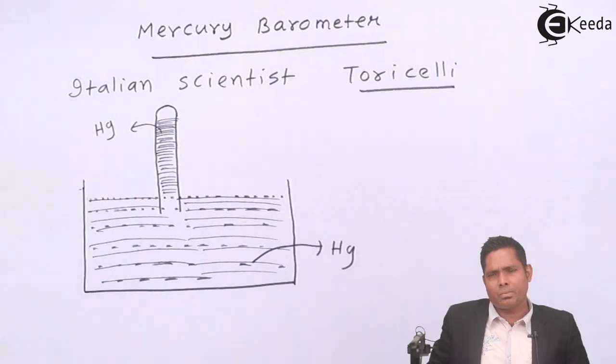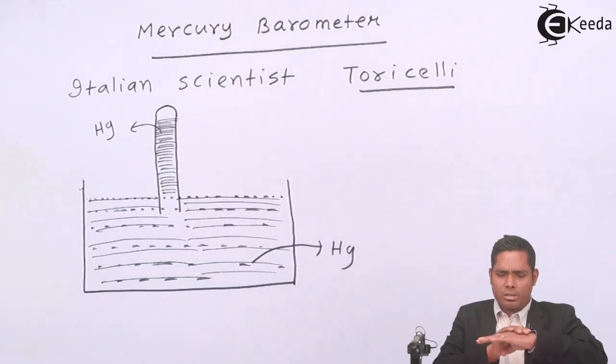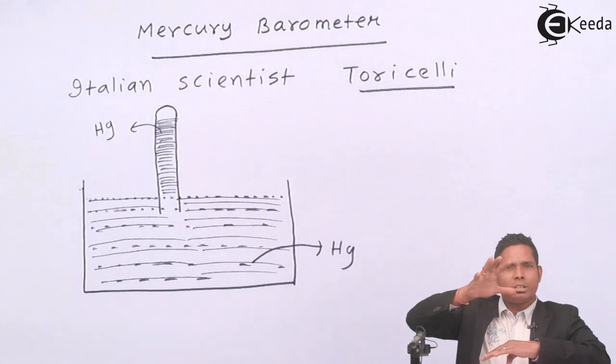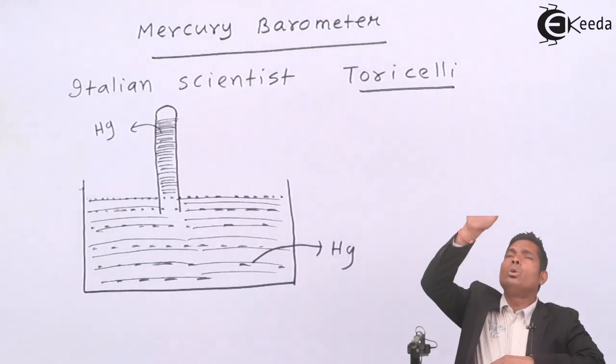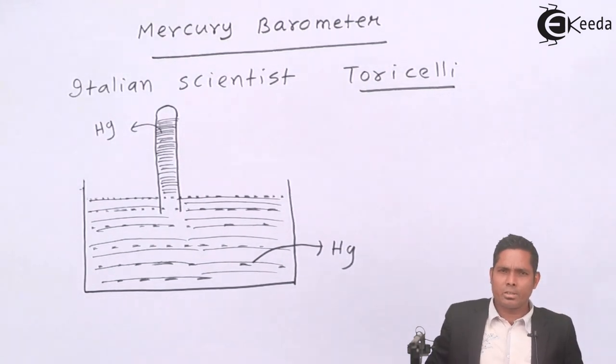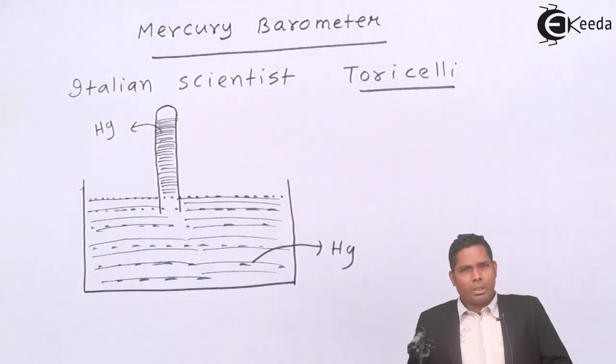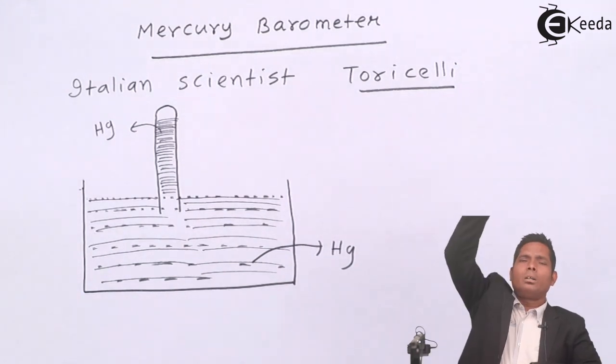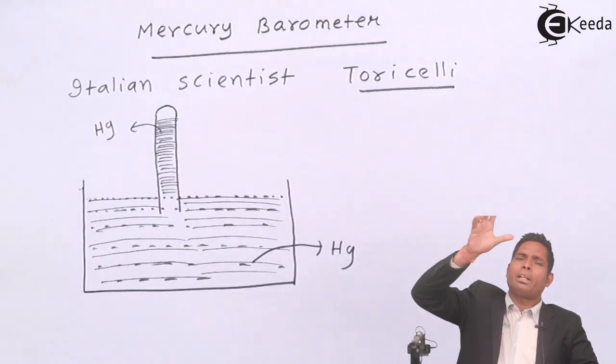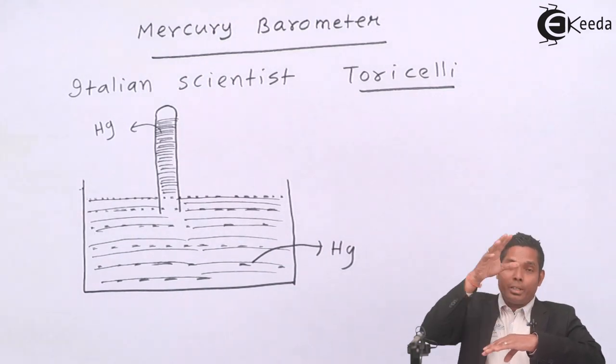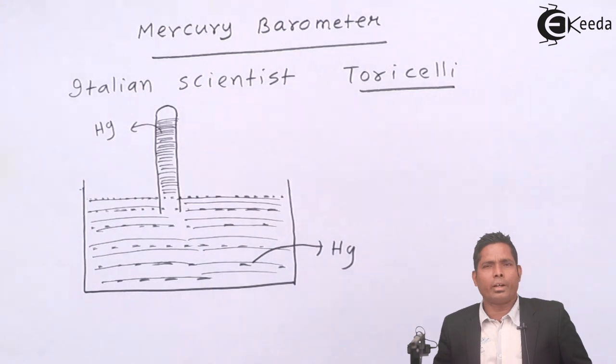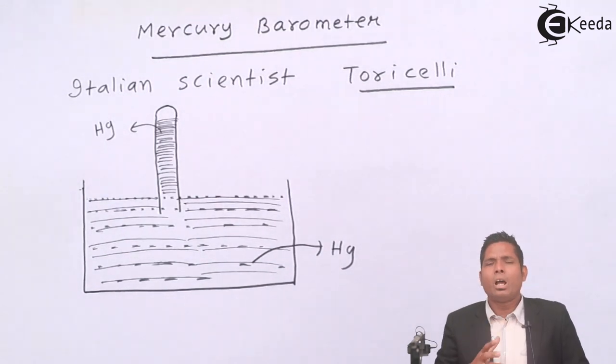So pressure is rho g h. Then what is the pressure of atmosphere? The pressure of atmosphere - this is ground, earth surface. Then from the surface if the fluid extends up to kilometers of atmosphere, then it is difficult to measure the pressure directly. The pressure here will be rho, density of the atmosphere times g times h. But it is difficult to find the atmospheric pressure. Therefore practically in the laboratory, how to find atmospheric pressure?